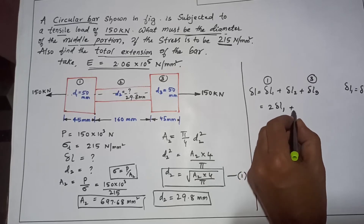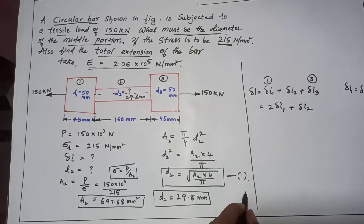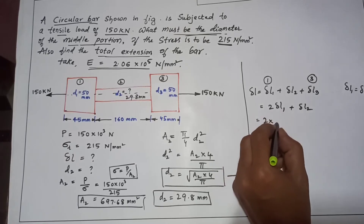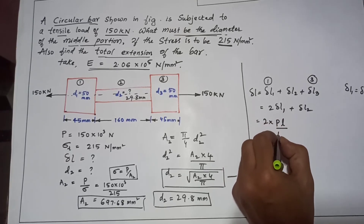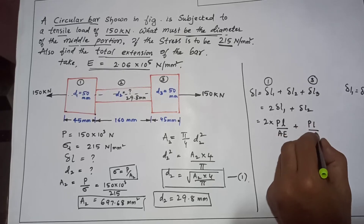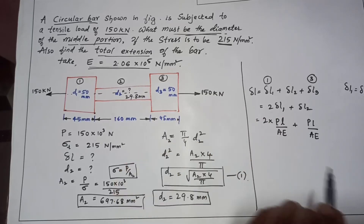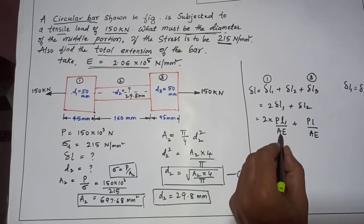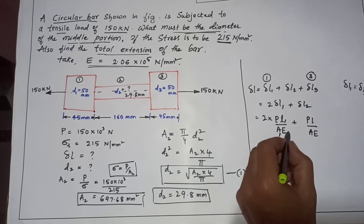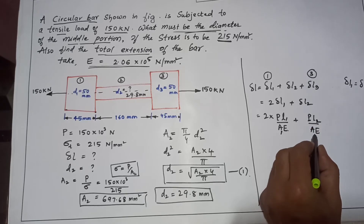So we can write: delta L = 2 × (P × L1) / (A1 × E) + (P × L2) / (A2 × E). Here P is common for all elements, length is different for each, area is also different, and Young's modulus E is the same for all. For element 2, only the length and area will differ.